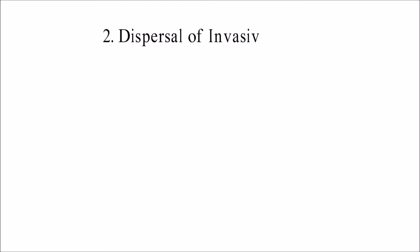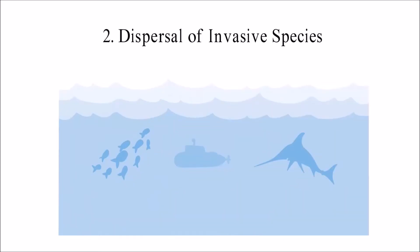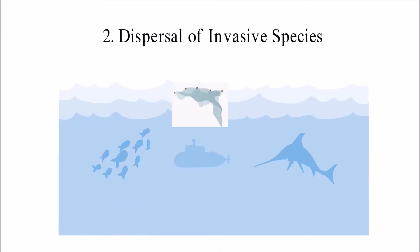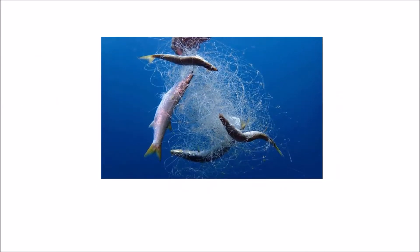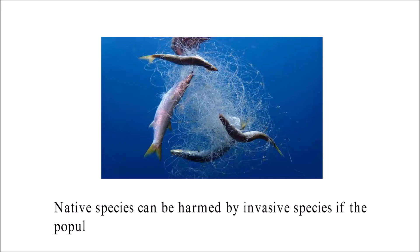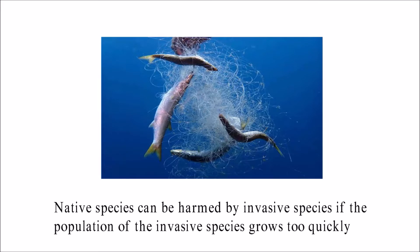2. Dispersal of Invasive Species. Ghost nets are often moved by ocean currents from one place to another. Depending on current strength, this can happen quickly or take a long time. As long as ghost nets stay in the ocean, they pass through many different places, hosting a wide range of animal species. Both old and new ghost nets can spread invasive species around the world. Native species can be harmed if the population of invasive species grows too quickly, and invasive species may also introduce parasites and diseases to native species.